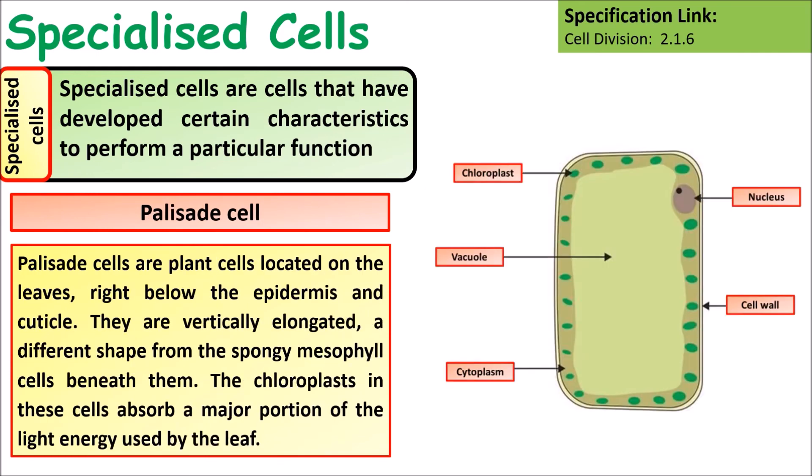Palisade cells are located on the upper epidermis of leaves. They are long and elongated and have lots of chloroplasts. Because they have a high number of chloroplasts, they can carry out lots of photosynthesis.